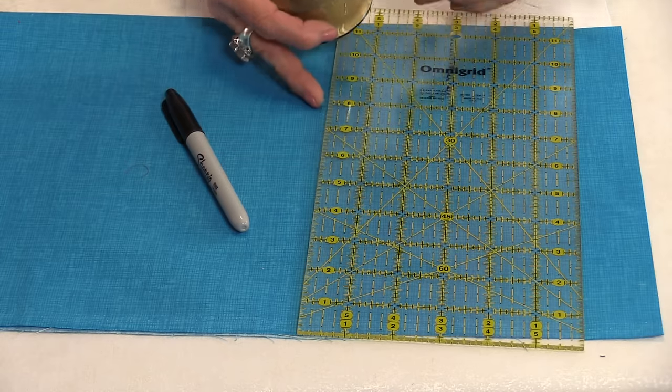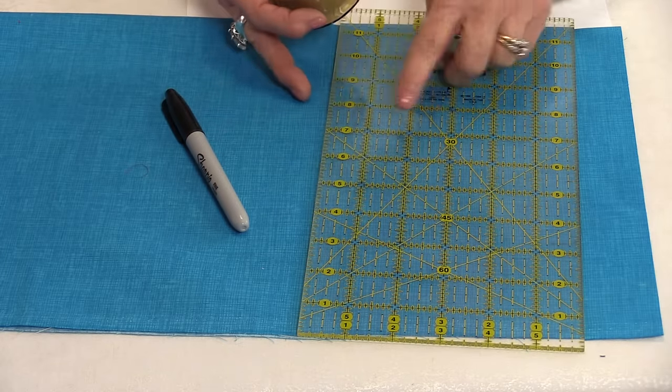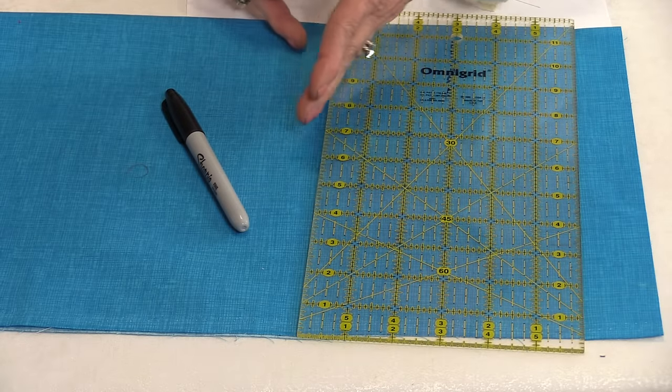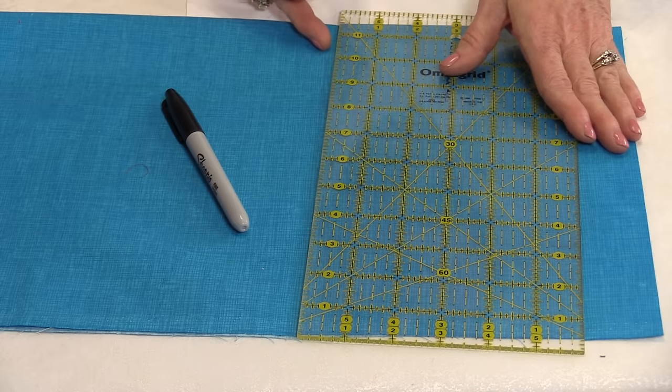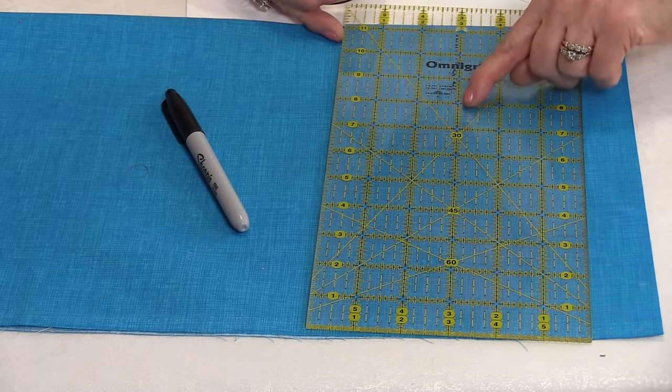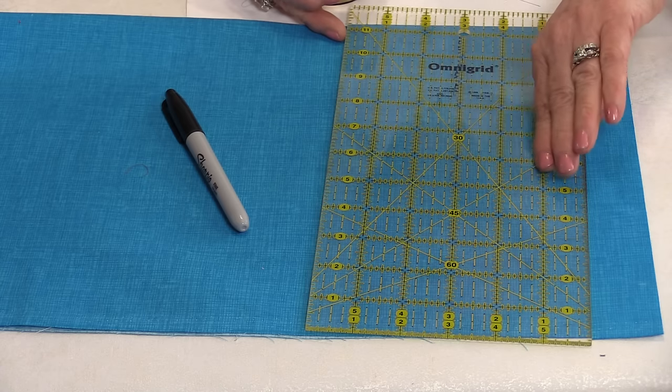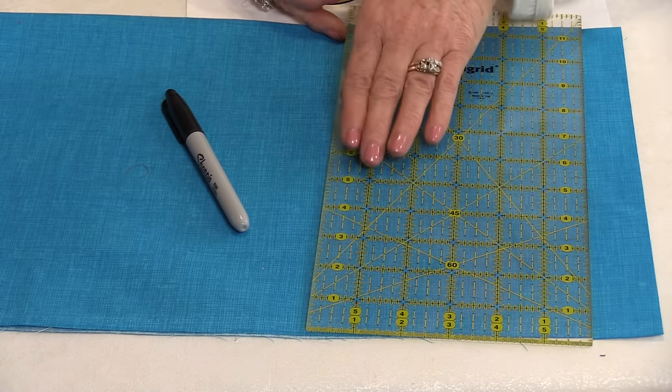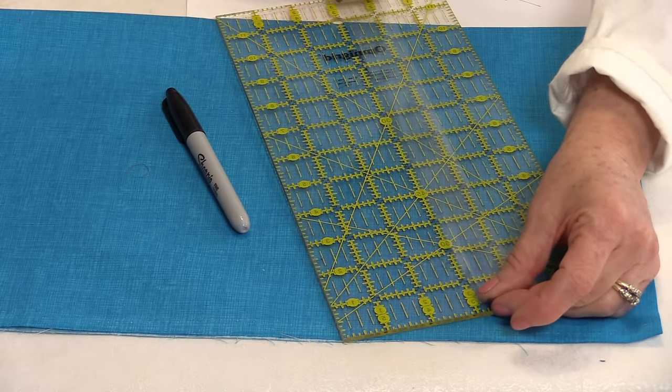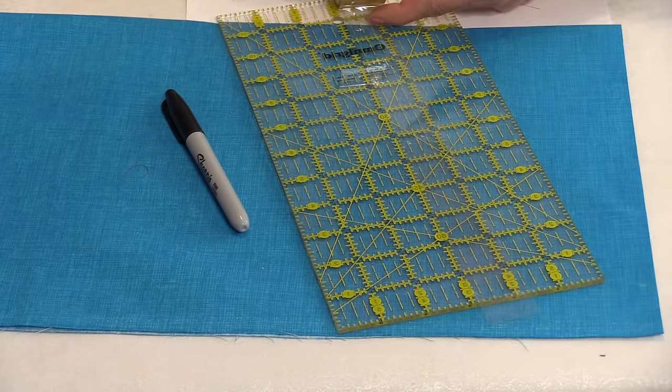So Linda had recommended to mark the back of your ruler with the Incredible Tape at the cutting line that you are going to need. Now I need to cut this piece into 3-inch strips, so I'm going to lie the Incredible Tape on the back of the ruler right on that 3-inch mark. The extra is going to hang over onto the 4-inch mark because I'm going to be cutting 3-inch strips.